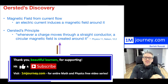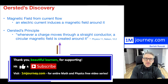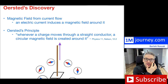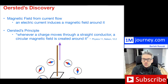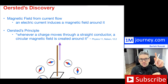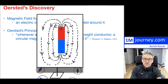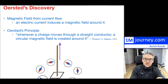Welcome to Oersted's discovery. When you're studying electricity and magnetism in introductory physics, you'll run into Oersted's principle — he discovered that a magnetic field is formed when a current starts to flow through a wire. If you take a stationary magnet, you know there's a magnetic field which forms around it. This is why we call it electromagnetism — the study of both electricity and magnetism combined.